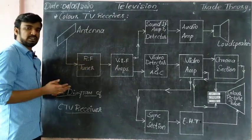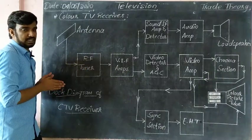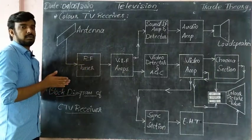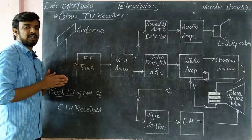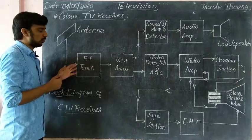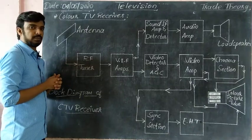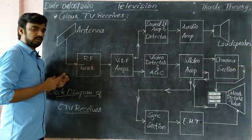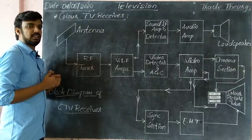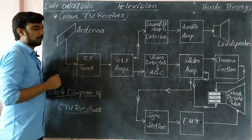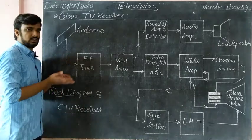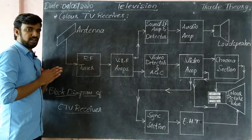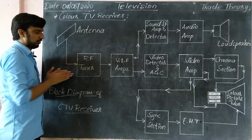The RF tuner has 3 blocks in the block diagram: 1 — RF amplifier; 2 — mixer and local oscillator; and 3 — a third section. We can tune it from a channel to a particular intermediate frequency.